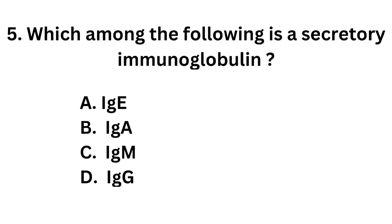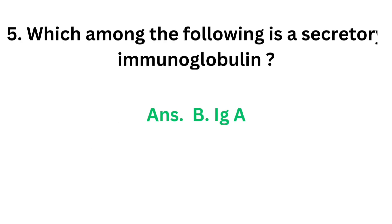Question number 5. Which among the following is a secretory immunoglobulin? Option A: IgE. Option B: IgA. Option C: IgM. Option D: IgG. The correct answer is option B, IgA. IgA is the secretory immunoglobulin.